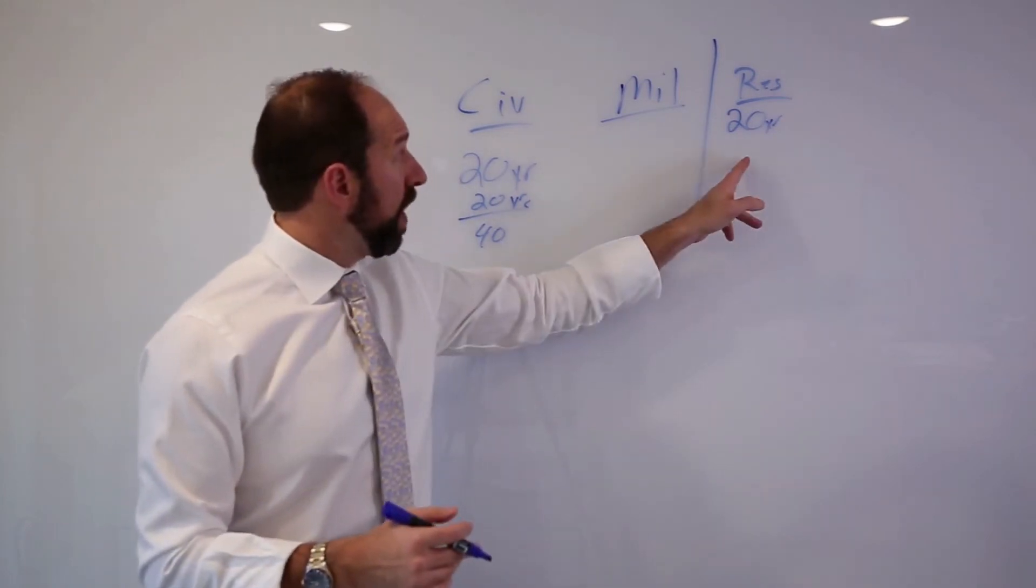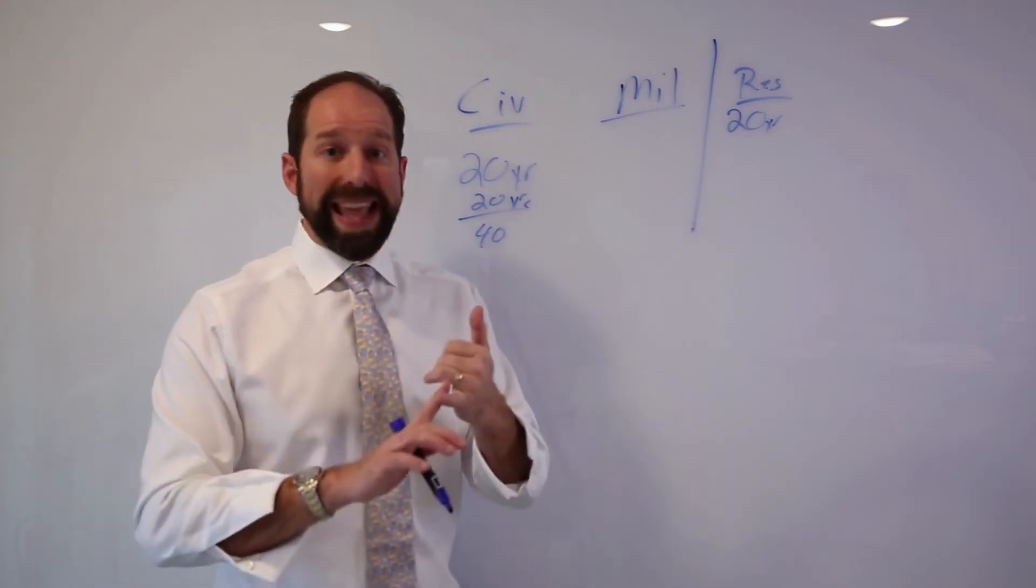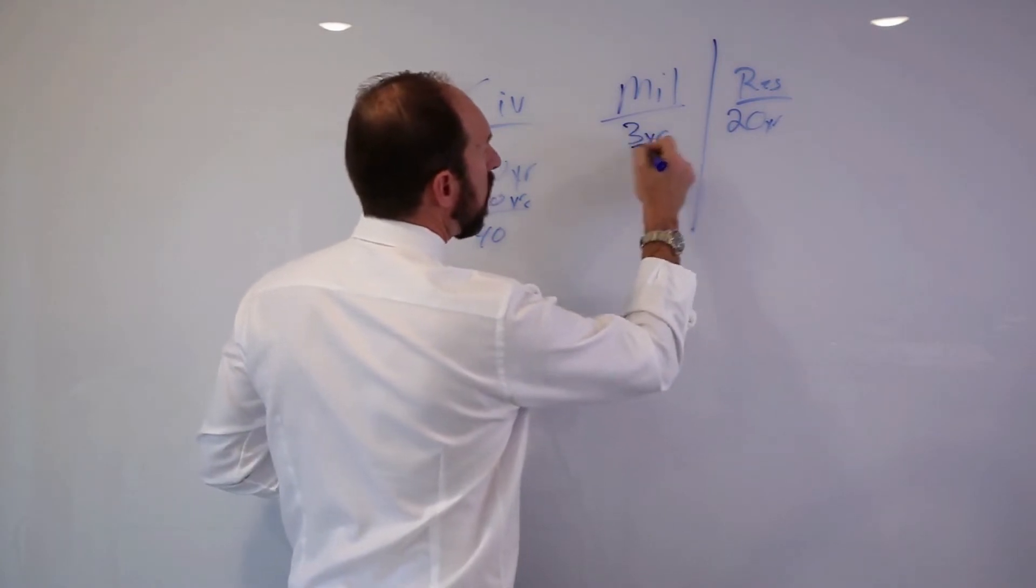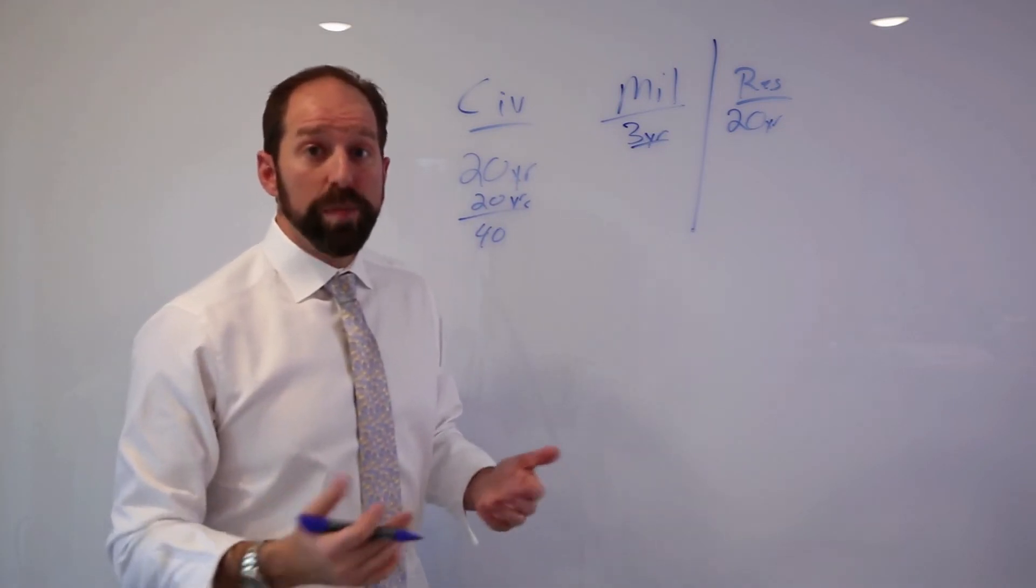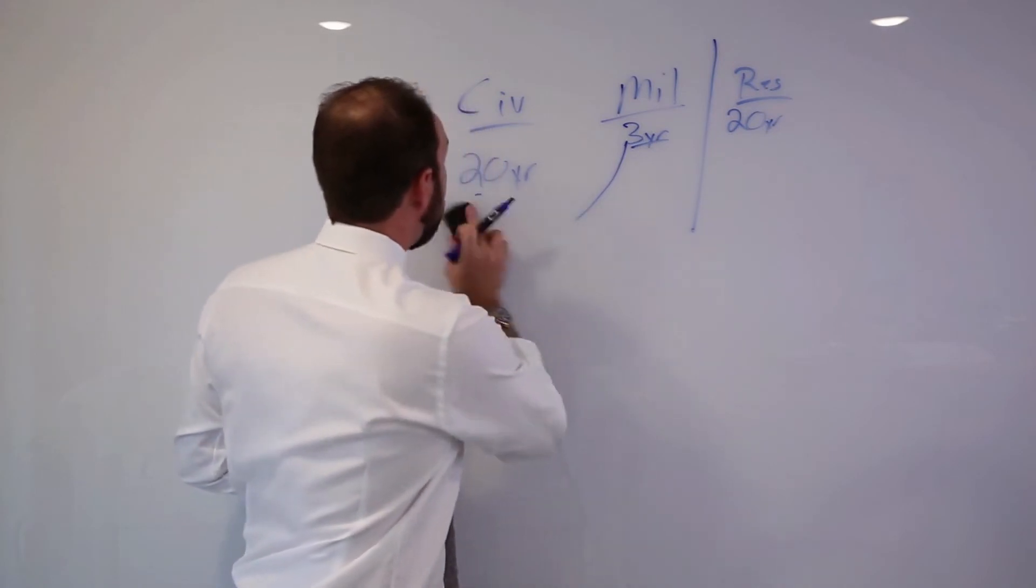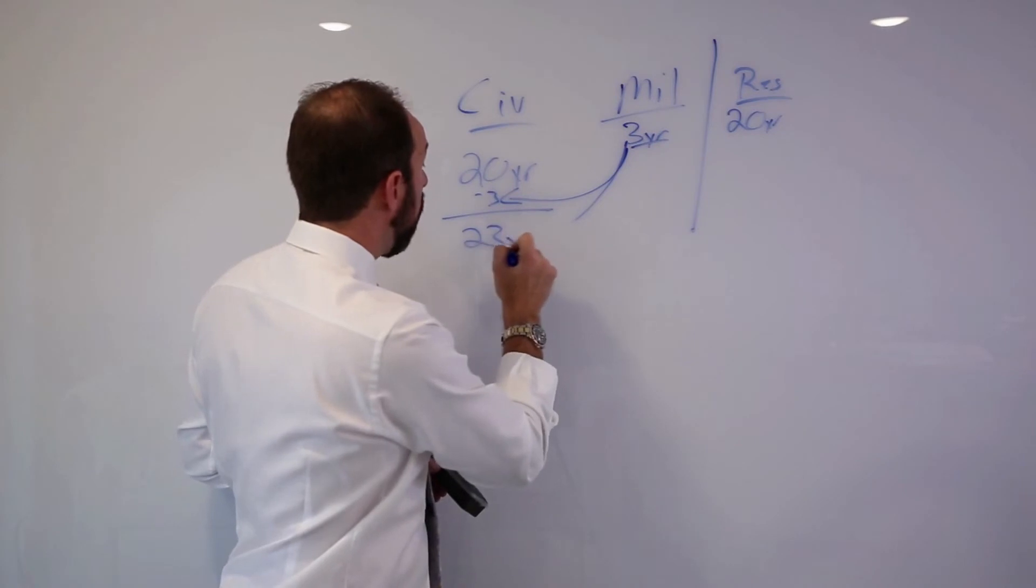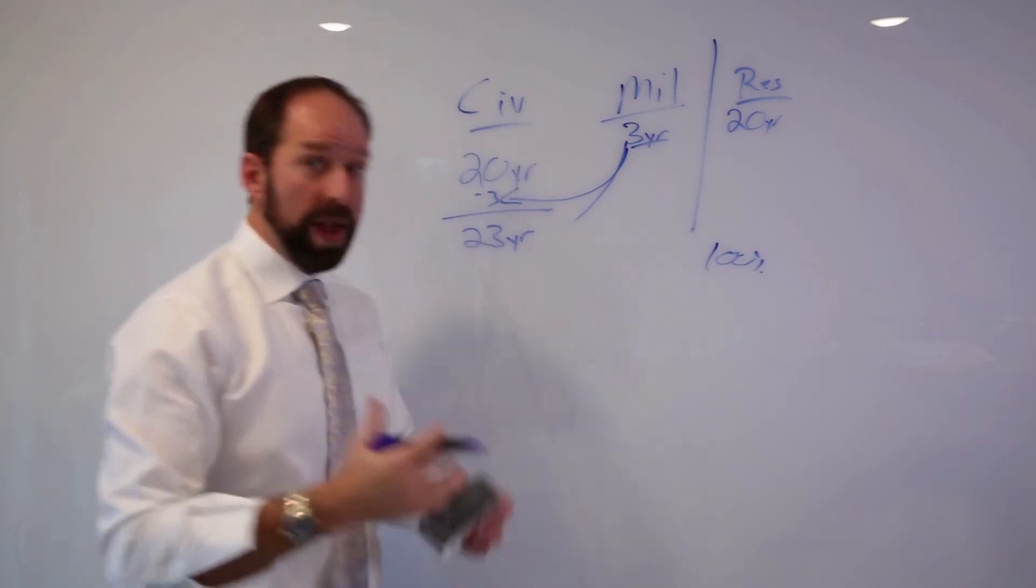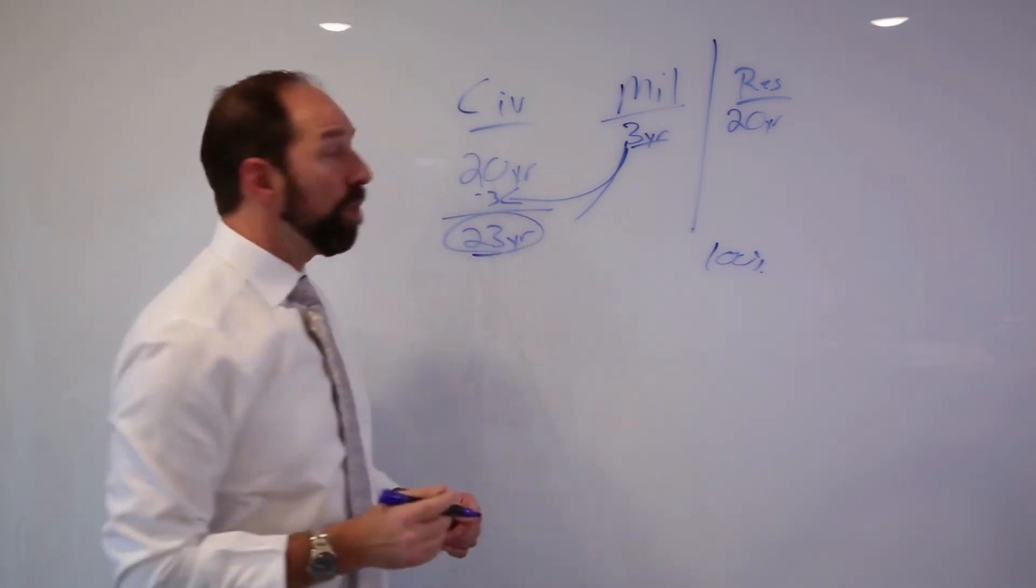Not only do you get this pension, any time that you had as active duty, this could include academy time, you can buy back as well. Any active duty time. Let's say he had a total of three years of active duty time while he was in the reserves. You can absolutely buy that time back. And it's going to count towards your years of service. So, then he would have 23 years of federal service. He still gets 100% of his pension because it's a reserve pension coming in. And he's able to get this time that's going to account for his service.